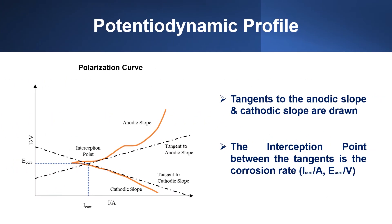In a polarization curve, the upper part is the anodic slope and the lower part is the cathodic slope. In order to determine the corrosion rate, tangents to the anodic slope and cathodic slope are drawn. The interception point between the tangents is the corrosion rate.